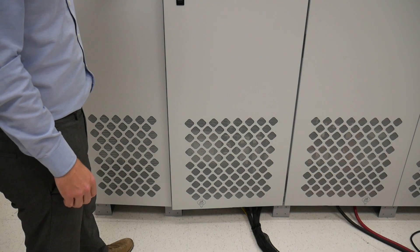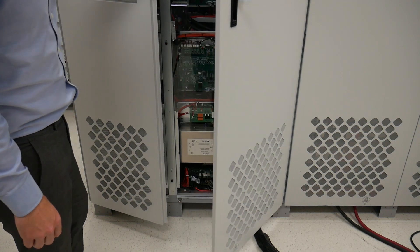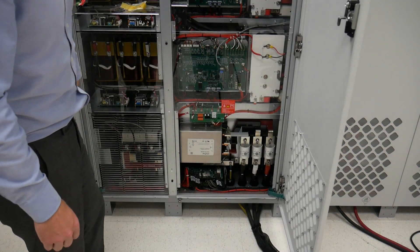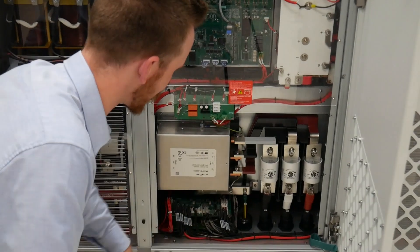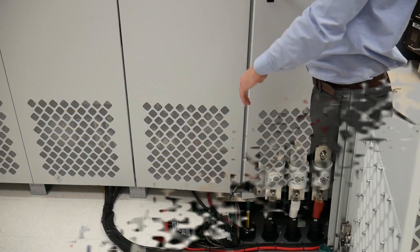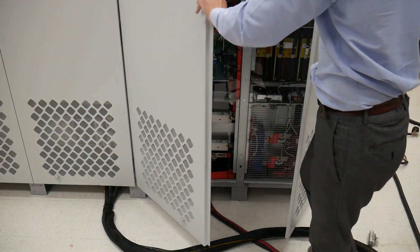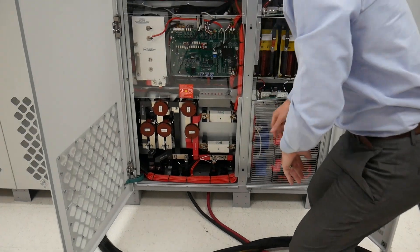The input power is located on the left hand cabinet and we connect our three phase 480 voltage down here. Behind the right hand cabinet our DC output connections are made here.